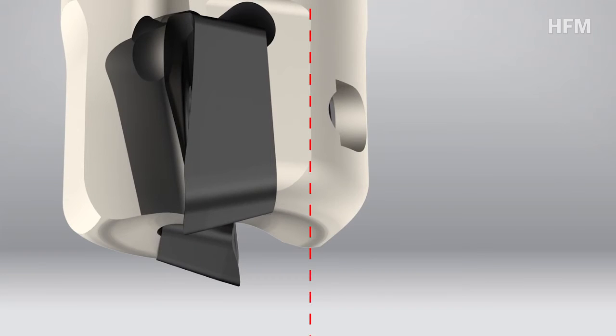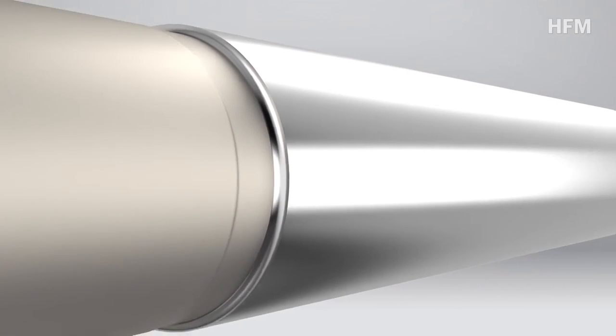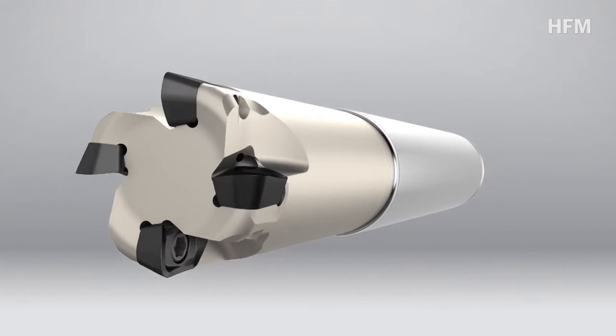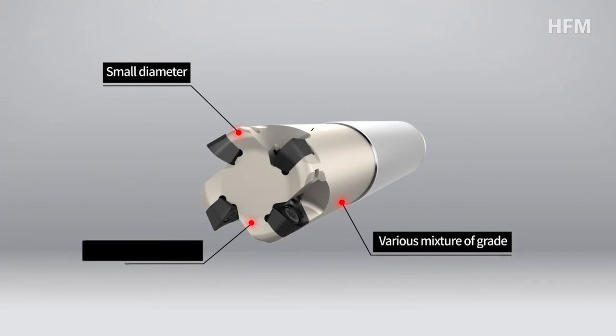For holder setup, axial rake angle is negatively formed to strengthen toughness, reducing contact surface with workpiece, minimizing tool vibration with flank side and material, increasing chipping expectancy and realizing stable high hardness processing.